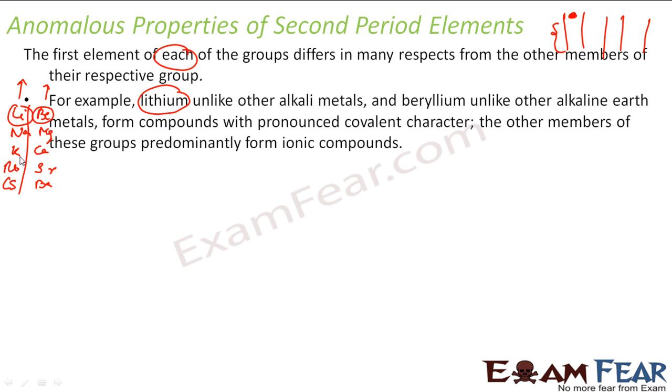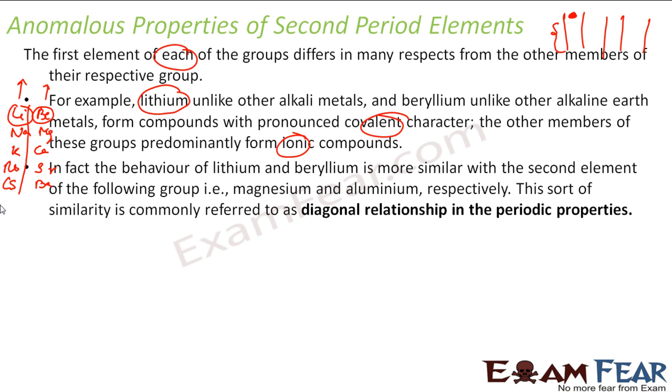If you see NaCl, KCl, all are ionic. But lithium and beryllium, they form covalent character compounds. And these other guys form ionic compounds. The property is different.